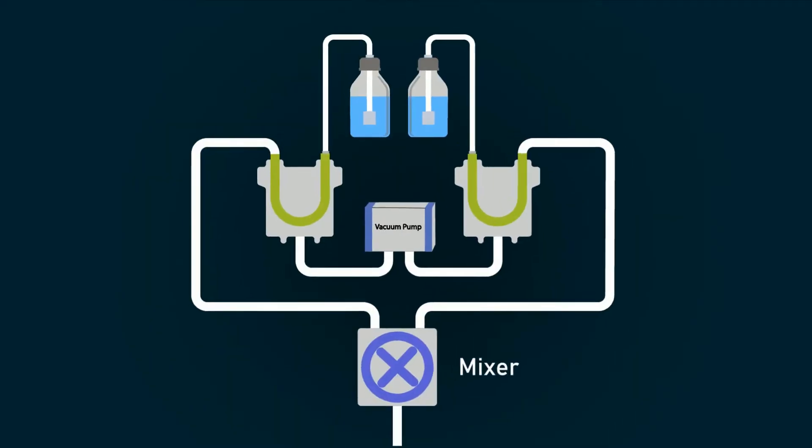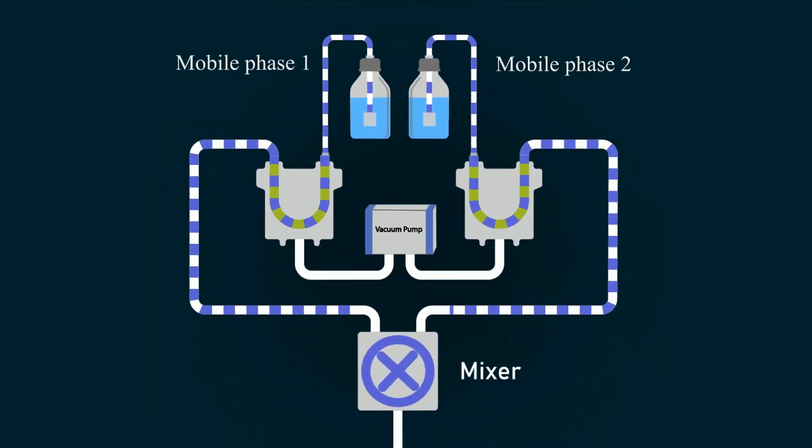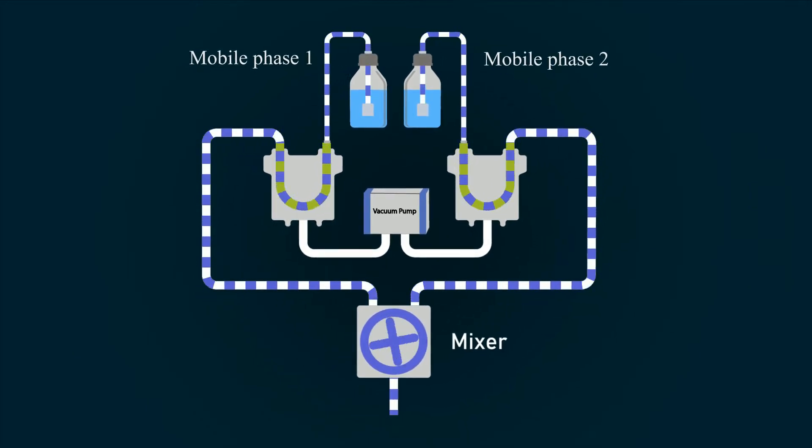In degasser, the gas bubbles are removed from the streams using vacuum pump and then solvents are mixed using mixer.